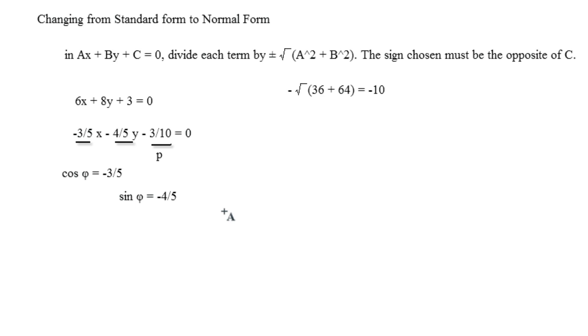Since we know that type of stuff. Since these are both negative, it definitely has to be in the third quadrant. Because remember, sine and cosine are both negative right here.